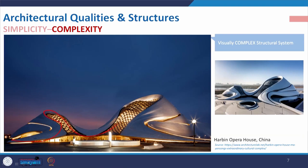Another example of complexity: here the curvature gives a smooth transition, and the complexity lies in the roofing structure — how it is made and the arrangement going up and down. Complexity does not mean we dislike the building due to structural chaos. This is the Harbin Opera House in China, one example conveying the architectural quality of complexity.